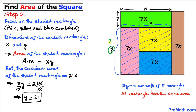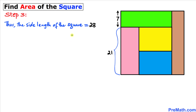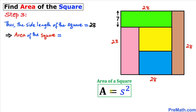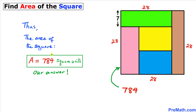So y equals 21 units. For the final step, the side length of this square is simply the sum of these two values: 7 plus 21, which is 28 units. Since it's a square, all sides are 28 units. Recalling the area of a square formula — area equals s squared — the area is 28 squared, which equals 784 square units. Thus the area of this square is 784 square units.